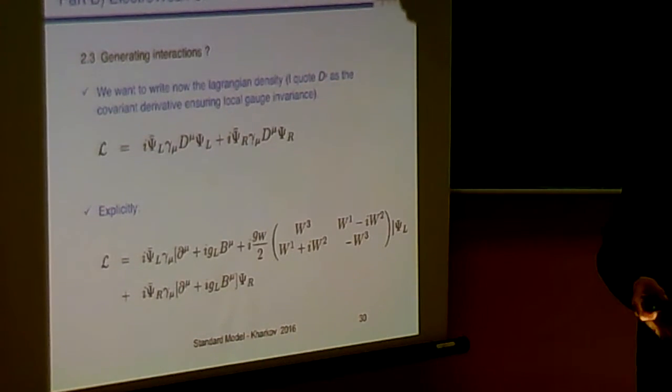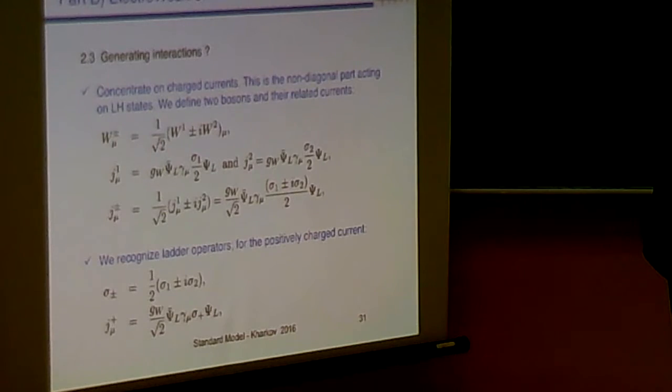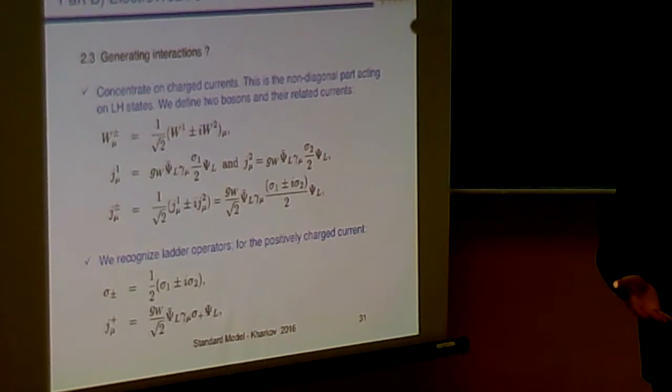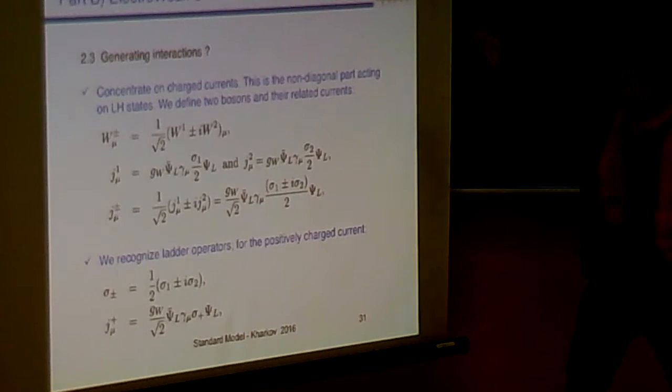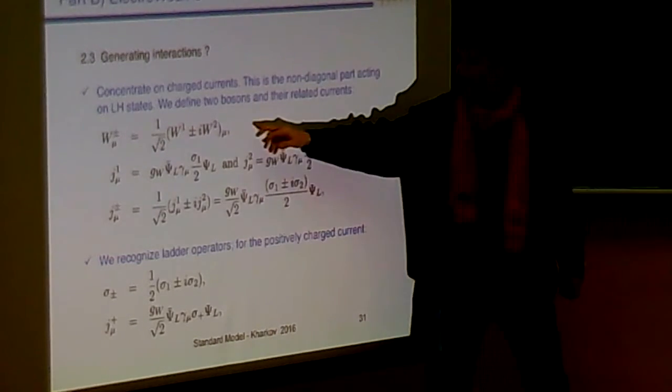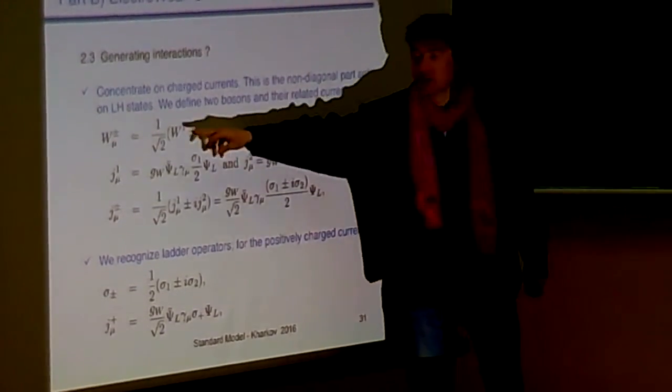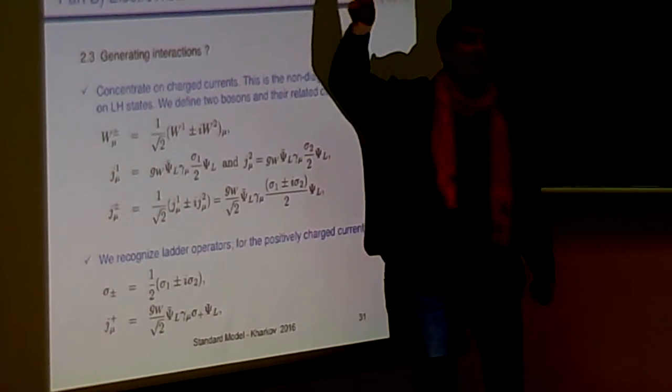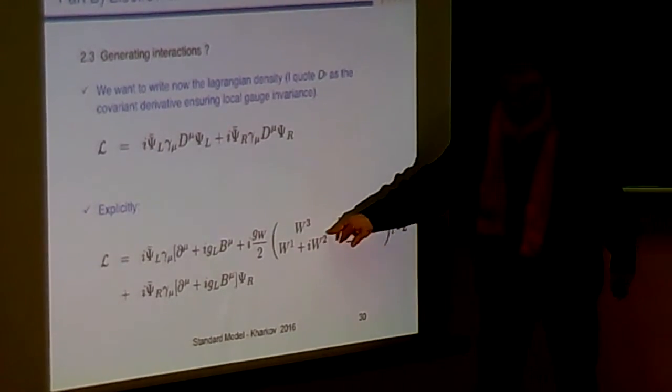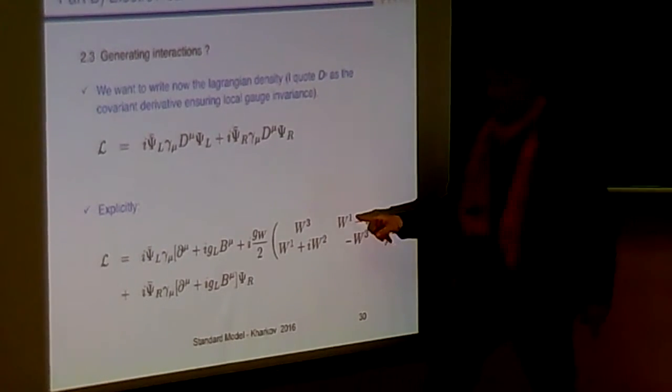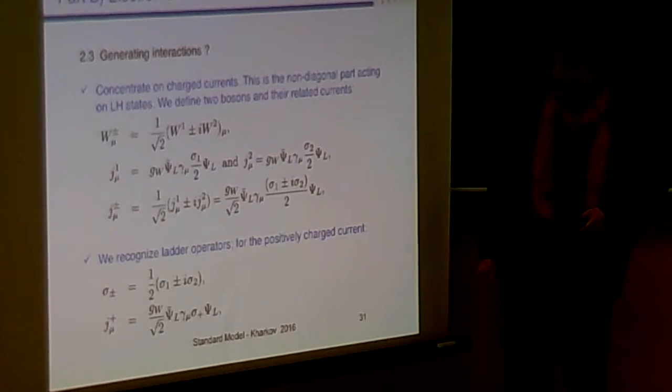So my first proposal would be we just focus on the charged ones and try to see whether we get the V-A theory we were so happy with confronting with the predictions. So what am I doing on this slide? Just writing, instead of the W1 plus or minus i W2, just one W plus and one W minus. Which means, coming back to the previous stuff, that we will deal with a current in between two spinors driven by a vectorial field, which would be either W plus or W minus.